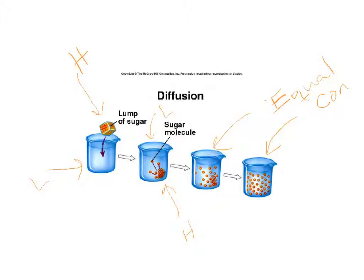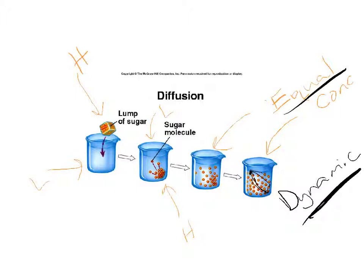It's important to understand that molecules are continuously moving. A sugar molecule over here might move to another area, and another molecule might move back to fill that space. This is a continuous dynamic process. These sugar molecules will continue to move back and forth, back and forth, while still keeping that equal concentration.